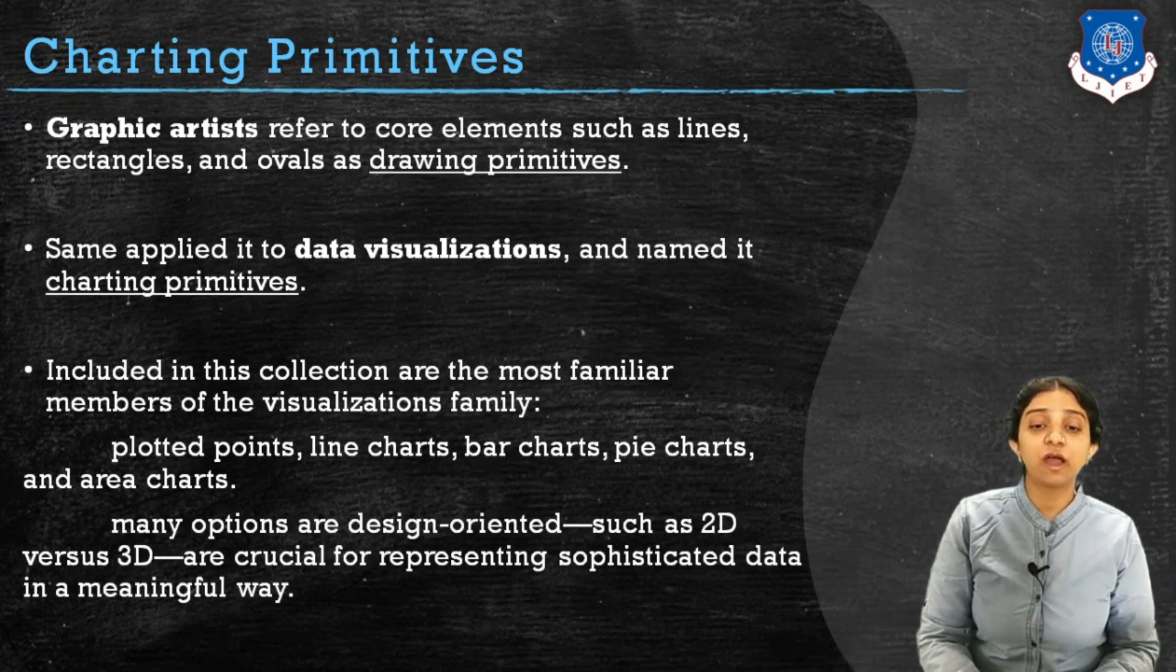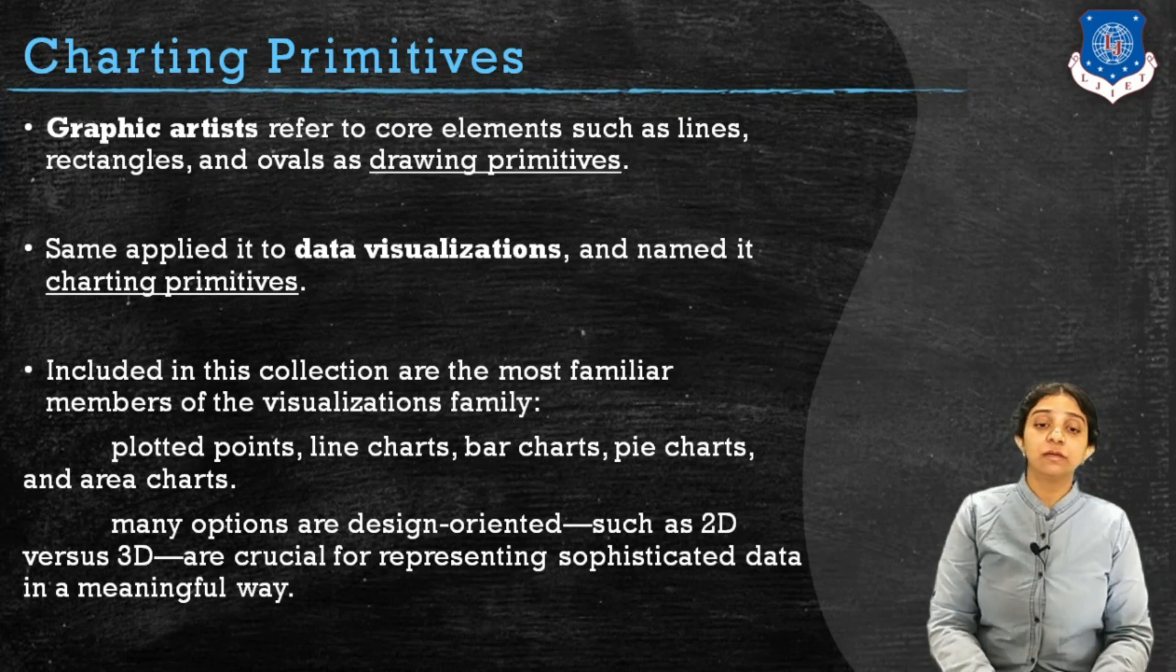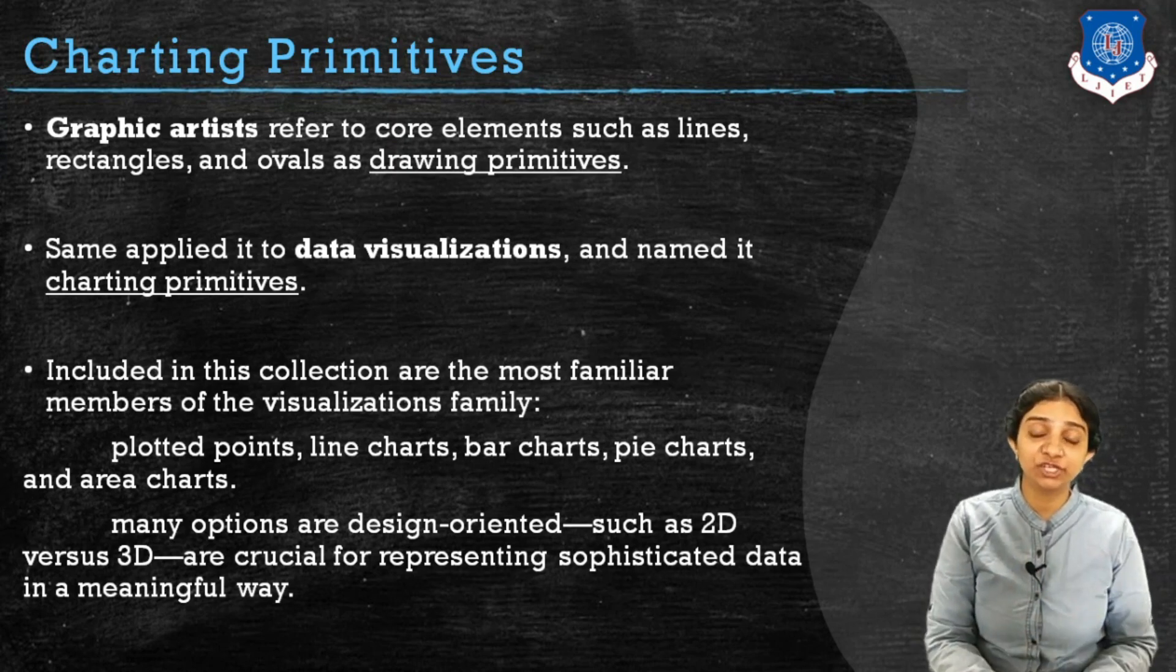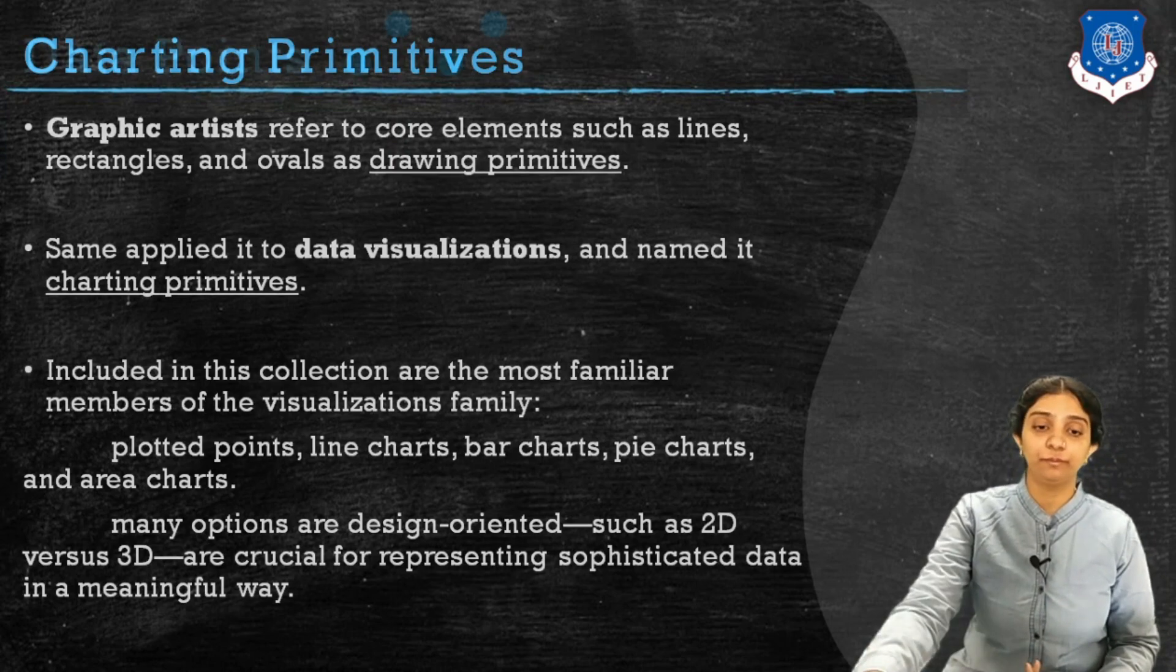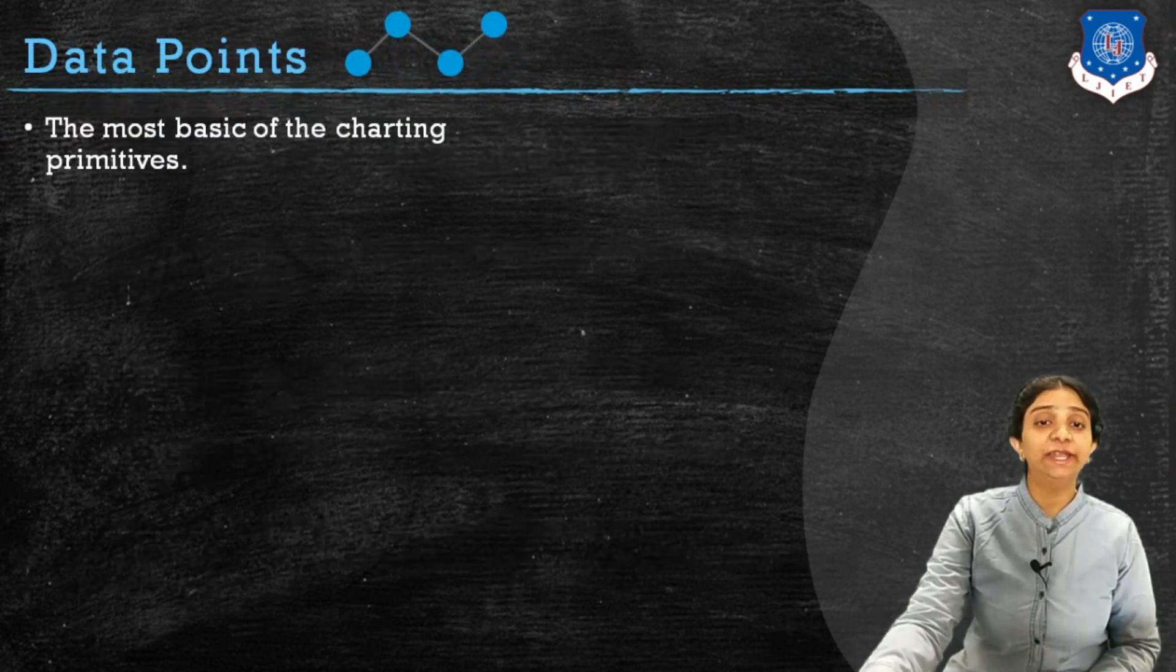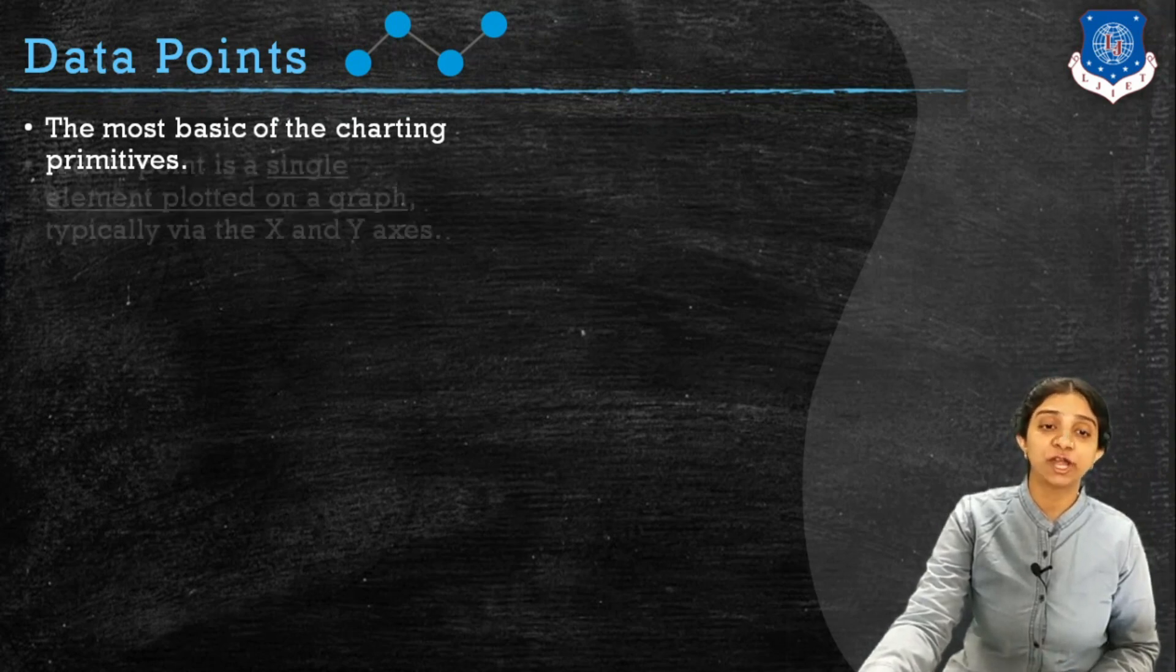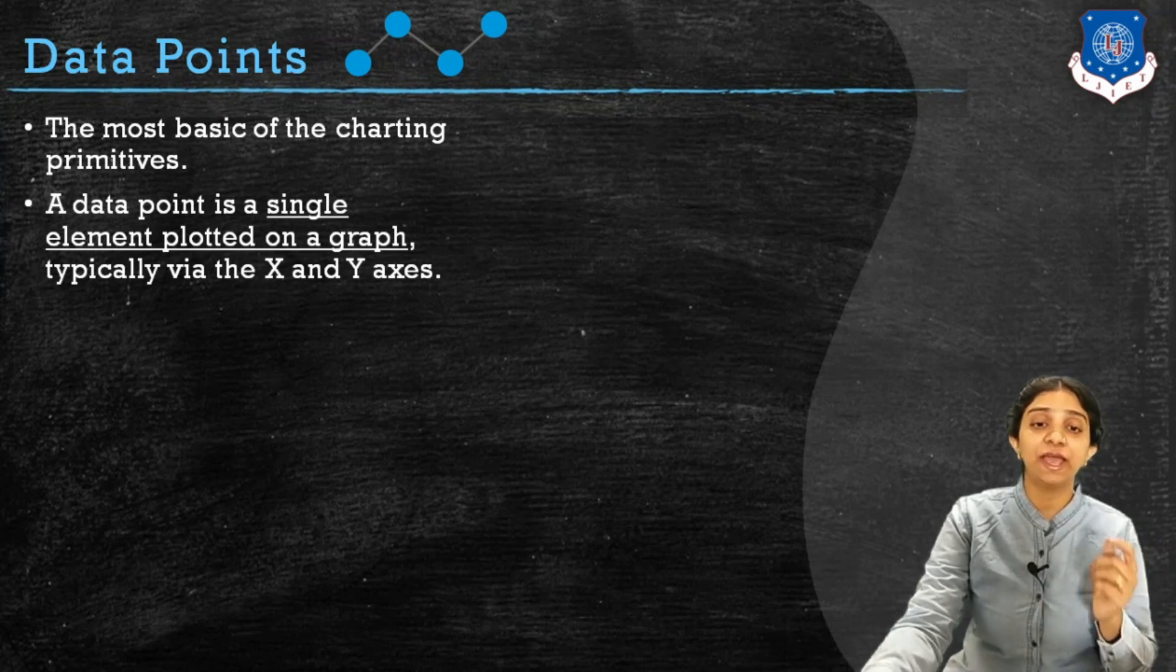Many options are design-oriented. You can choose from 2D and 3D, but it is important that for crucial representation of sophisticated data, it must get represented in a meaningful way. First representation is data point. It is the most basic form of charting primitives. A data point is a single element which is plotted on a graph.